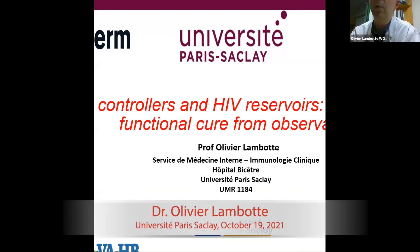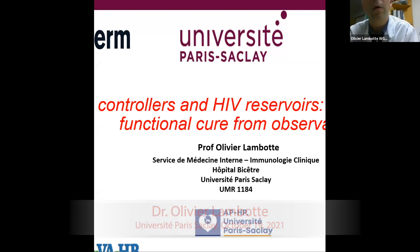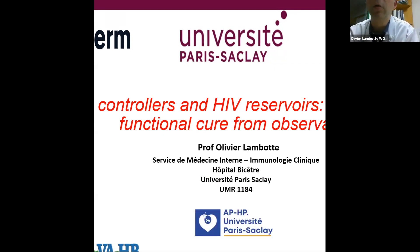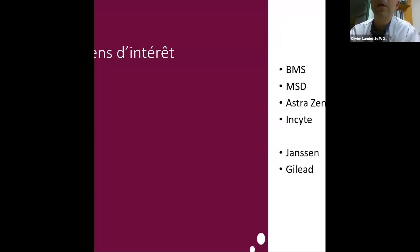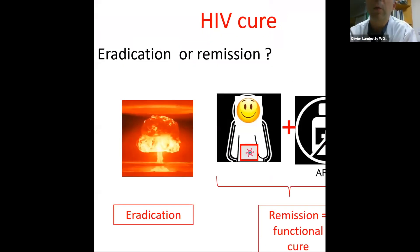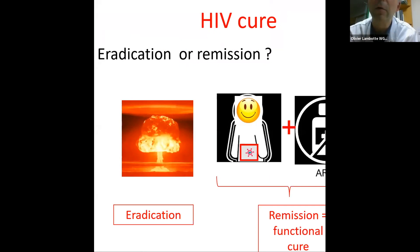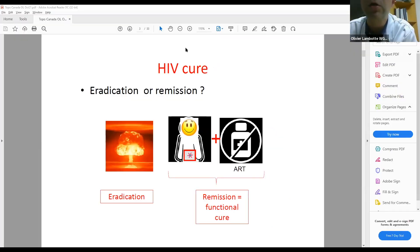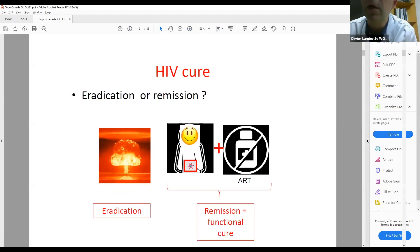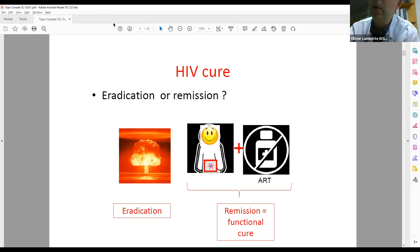Thank you for the invitation. I work on the question of functional cure and elite controllers, so I'll give you some information we have right now about these rare patients. When we speak about HIV cure, we can see two kinds of point of view: the first one, eradication — you destroy all HIV genomes and the patient is cleared without any infection. The second one is functional cure — the patient is still HIV infected but is able to withdraw antiretroviral therapy and can live without taking drugs.